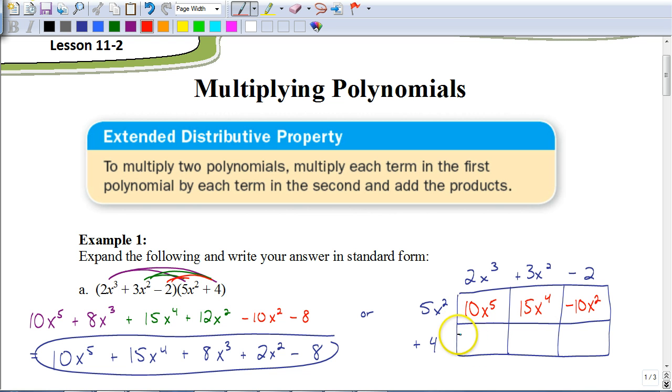And so, 5x squared times negative 2 would be negative 10x squared. Do this with the 4 now. 4 times 2x cubed would be 8x cubed. 4 times 3x squared, that's going to be 12x squared. And 4 times negative 2 is negative 8.